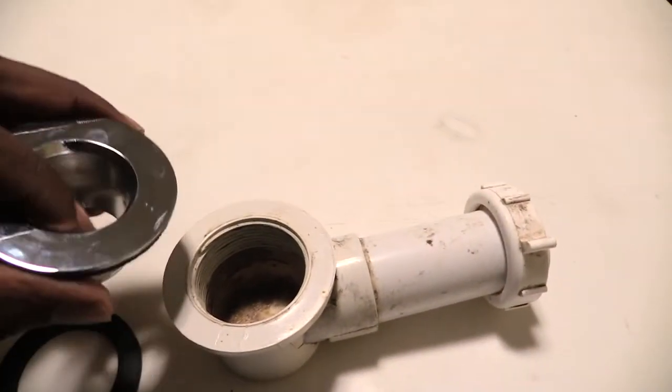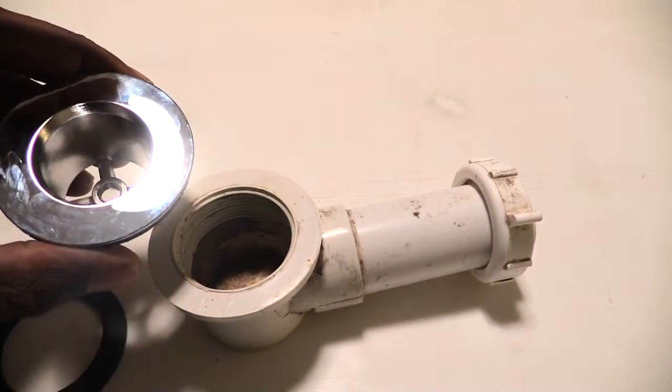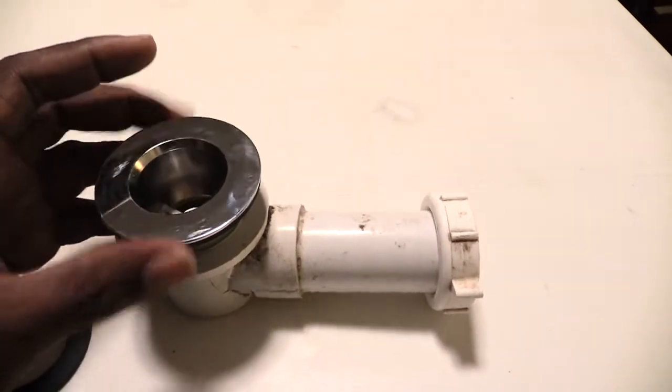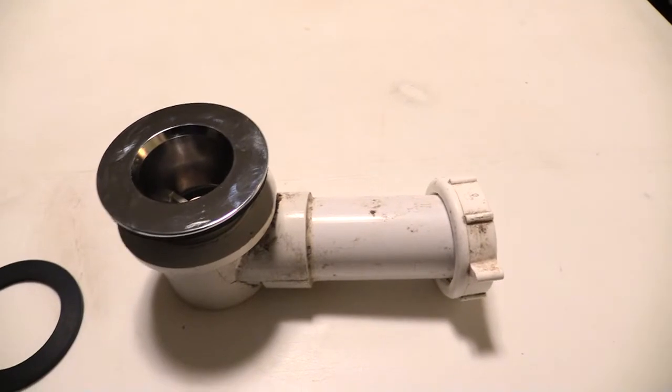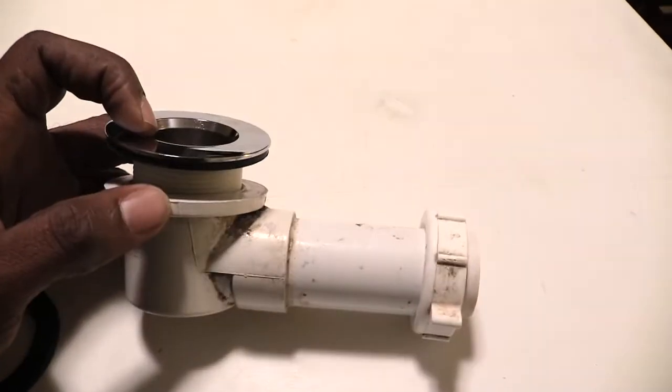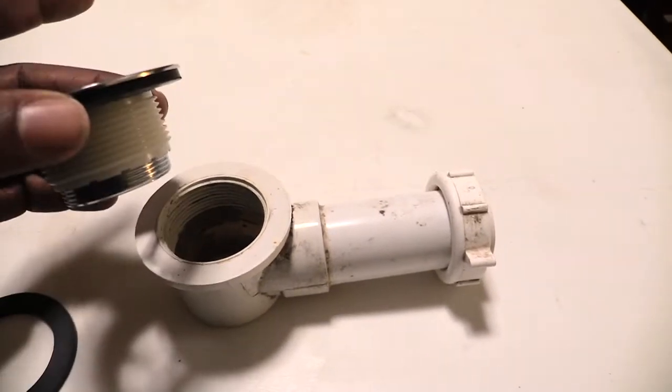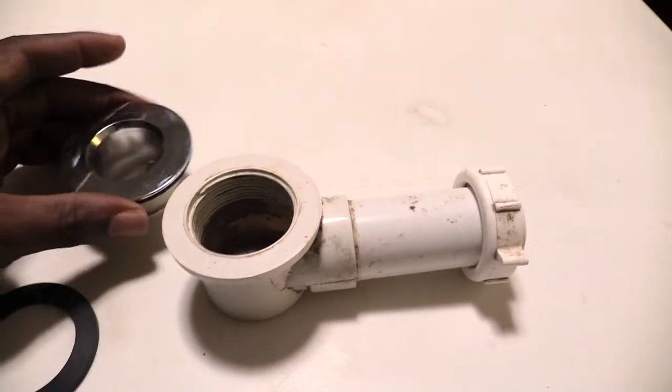But if this washer is missing, what's going on is this is a drain, it's in your tub. There's going to be a gap when this is screwed all the way in, there's going to be a gap that's in between this drain pipe as well as your drain that screws from the inside of your tub.